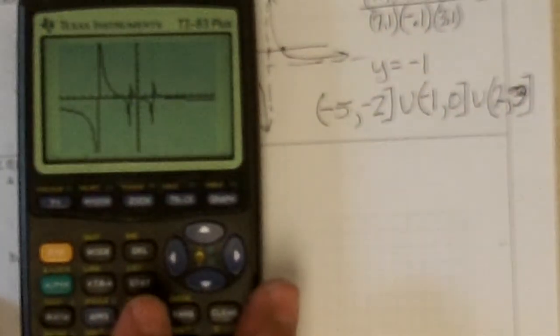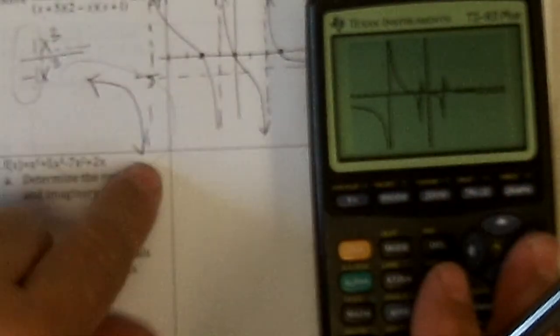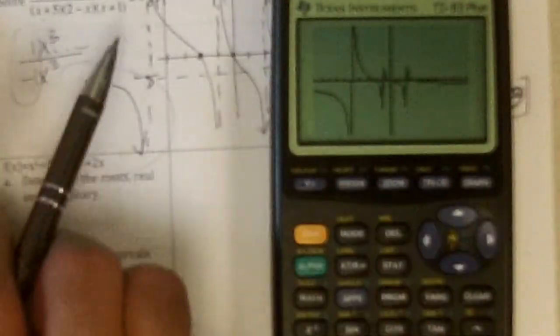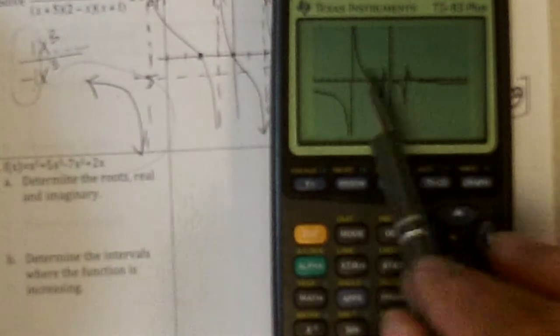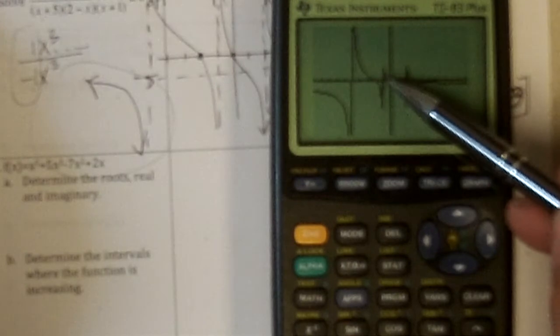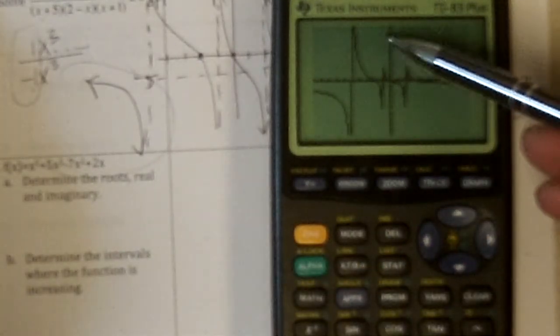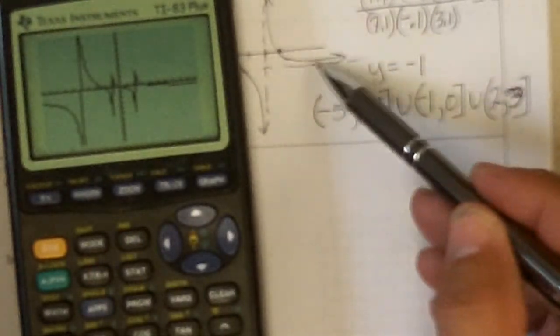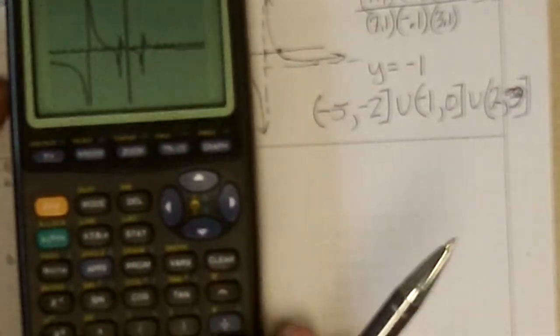And I don't know if you can see it, but you should be able to see that it was. This part here. Is here. And then we had it going down through negative two. Which it did. And then it jumped up to here. And came down through zero. Which we have. And then it jumped up again. At two. And came down. Below the X axis. Approaching that. Y equals negative one.